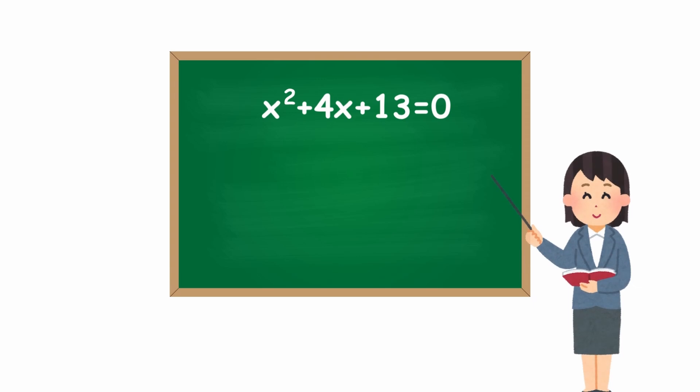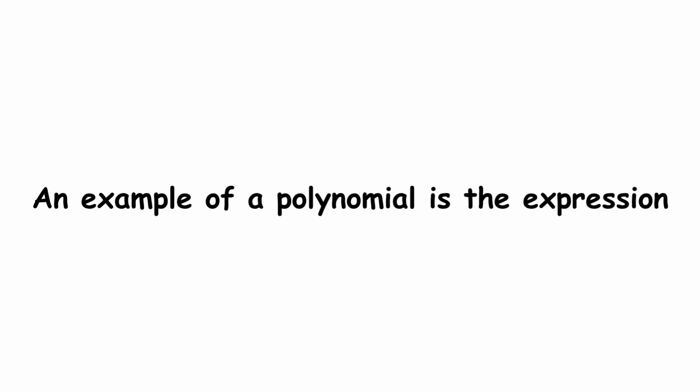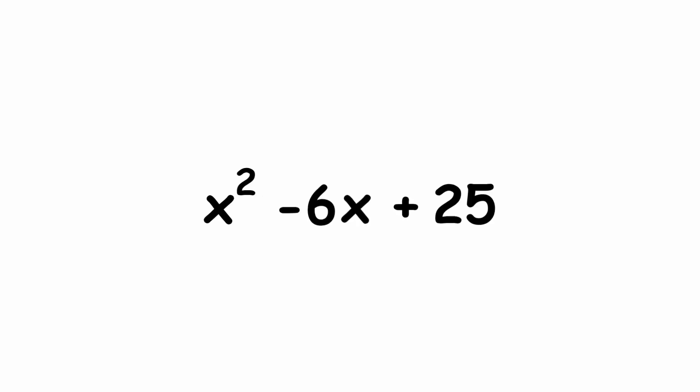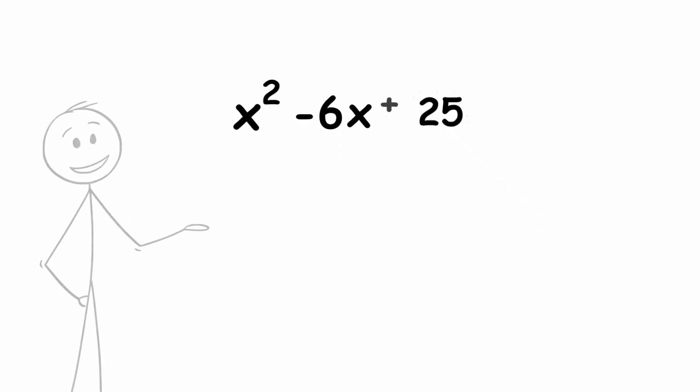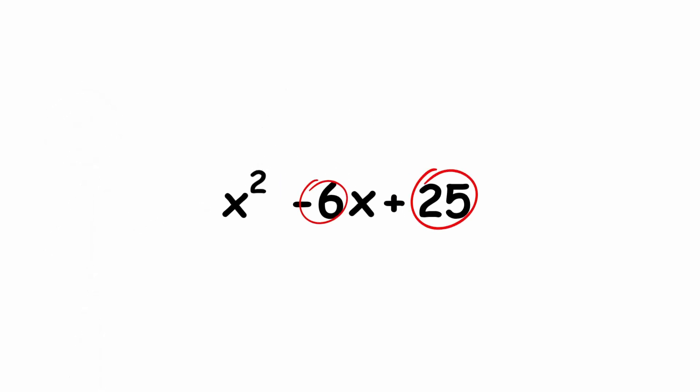With the basics covered, let's move on to applications. You will usually first encounter complex numbers in the context of solutions to polynomial equations. A polynomial is an expression created from variables and constants, where the only operations allowed are addition and multiplication, which can include raising a variable to the power of a positive integer. An example of a polynomial is x² − 6x + 25. The quantities being added together are called terms — the word polynomial itself means many-termed. The constants multiplying the variables are called the coefficients; here, the coefficients are 1, −6, and 25.